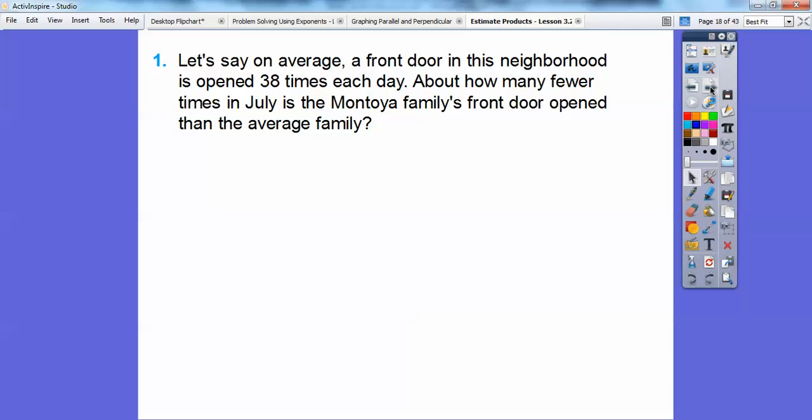Let's say on average a front door in this neighborhood is opened 38 times each day. About how many fewer times in July is the Montoya's family door opened than the average family? Well if we rounded 38 to the nearest 10s, it would round to 40 and then 31 days still in July, so 31 rounds to 30, then we multiply 40 times 30.